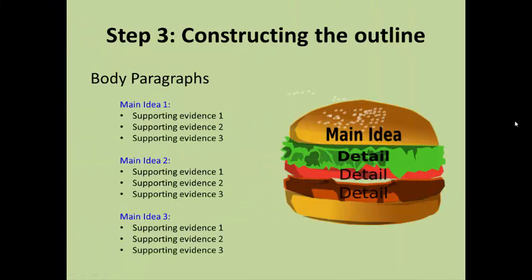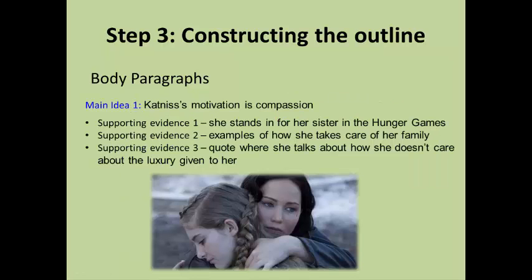Each main idea will be a body paragraph, and under each main idea you will list the evidence that supports that idea. In my example, my main idea is that Katniss's motivation is compassion. Three supporting pieces of evidence that I will use are: how she stands up for her sister in the story, specific examples of times in the book when she took care of her family, and a quote where she talks about how she doesn't care about all the luxury given to her, because that's not what's important in life.